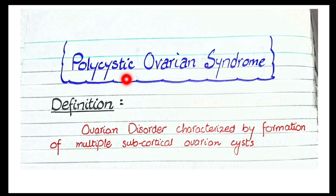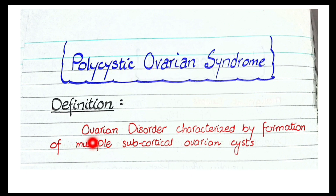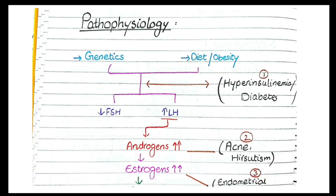The term polycystic ovarian syndrome is itself self-explanatory — it is the disorder characterized by development of multiple cysts in the ovary. So the definition is: an ovarian disorder characterized by formation of multiple subcortical ovarian cysts.